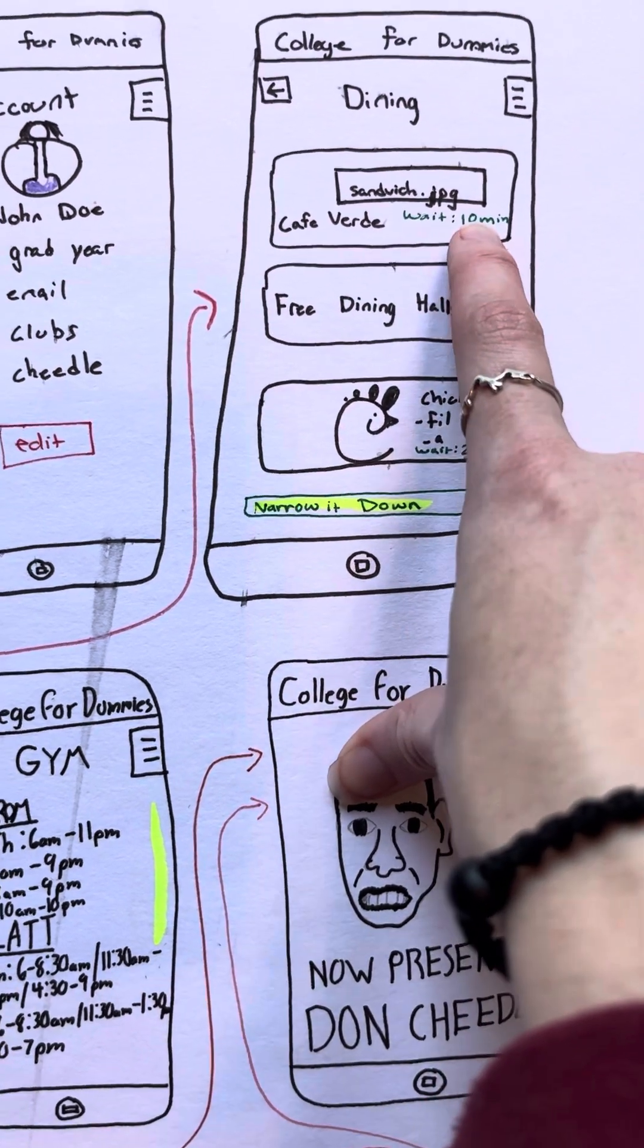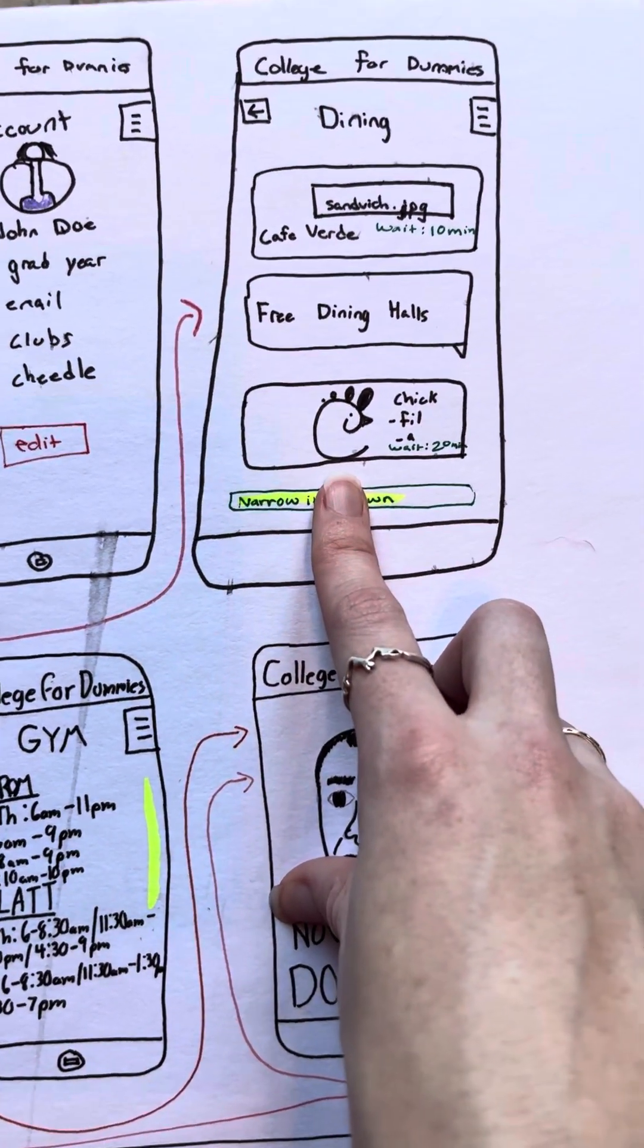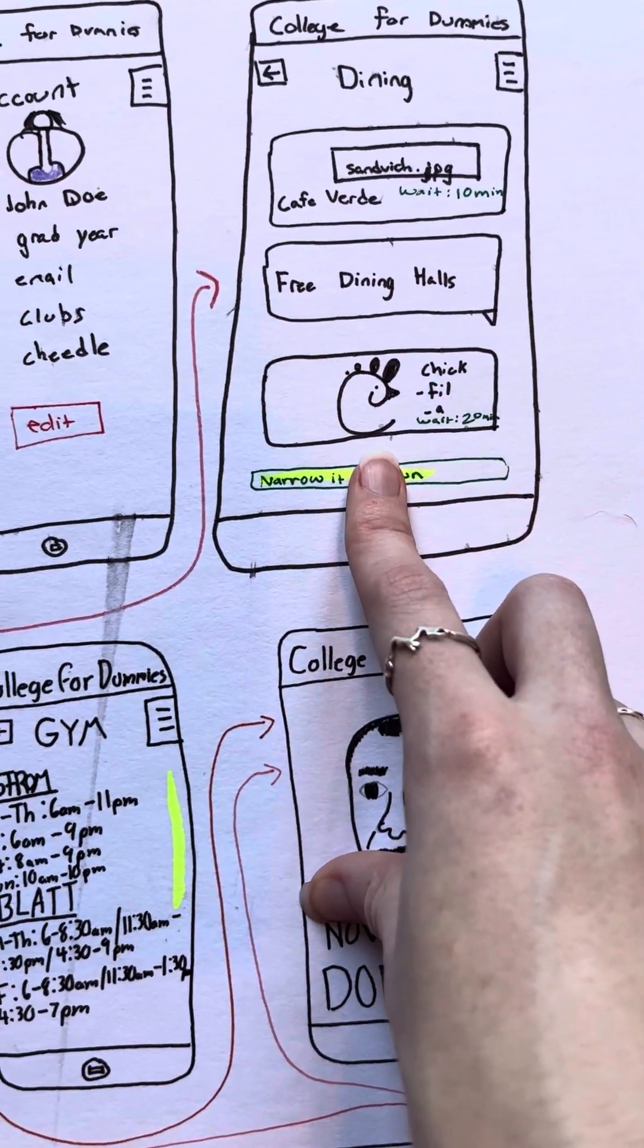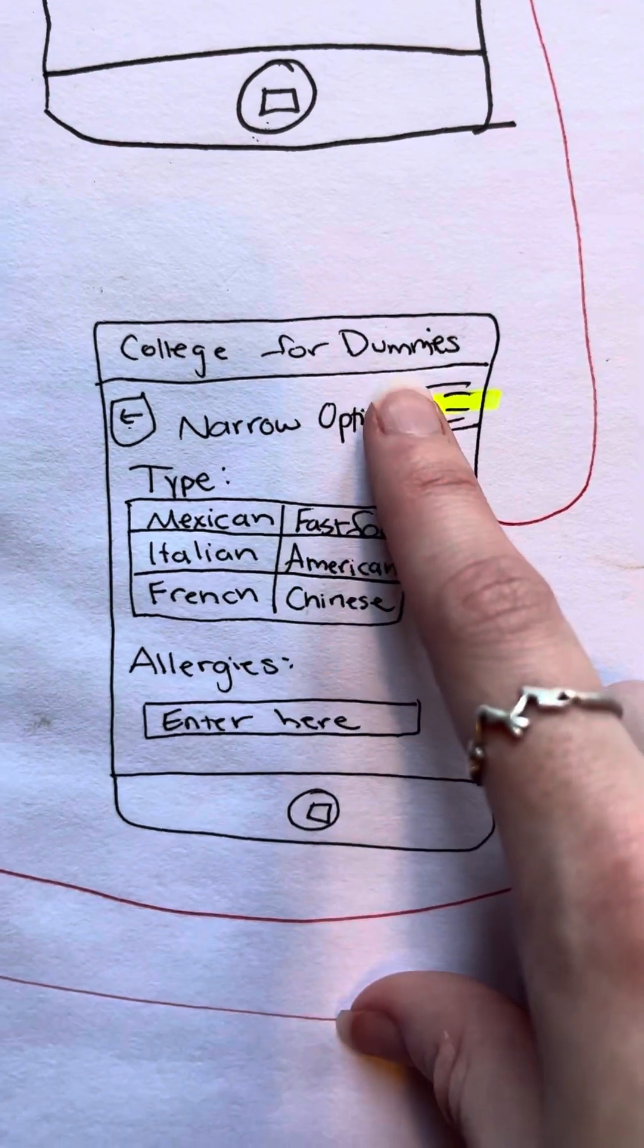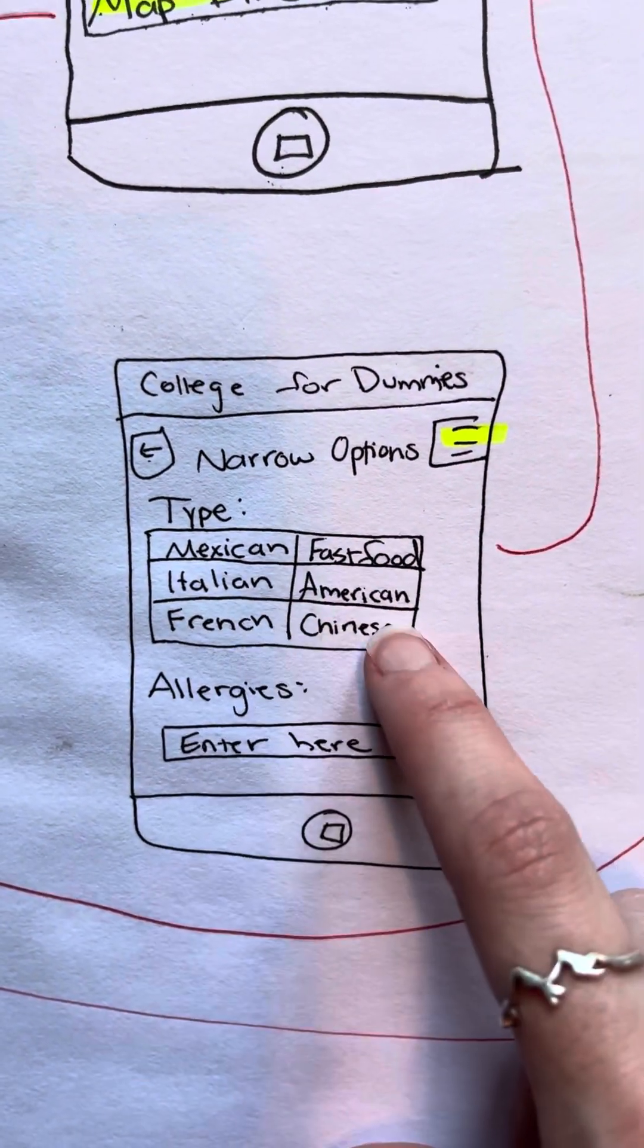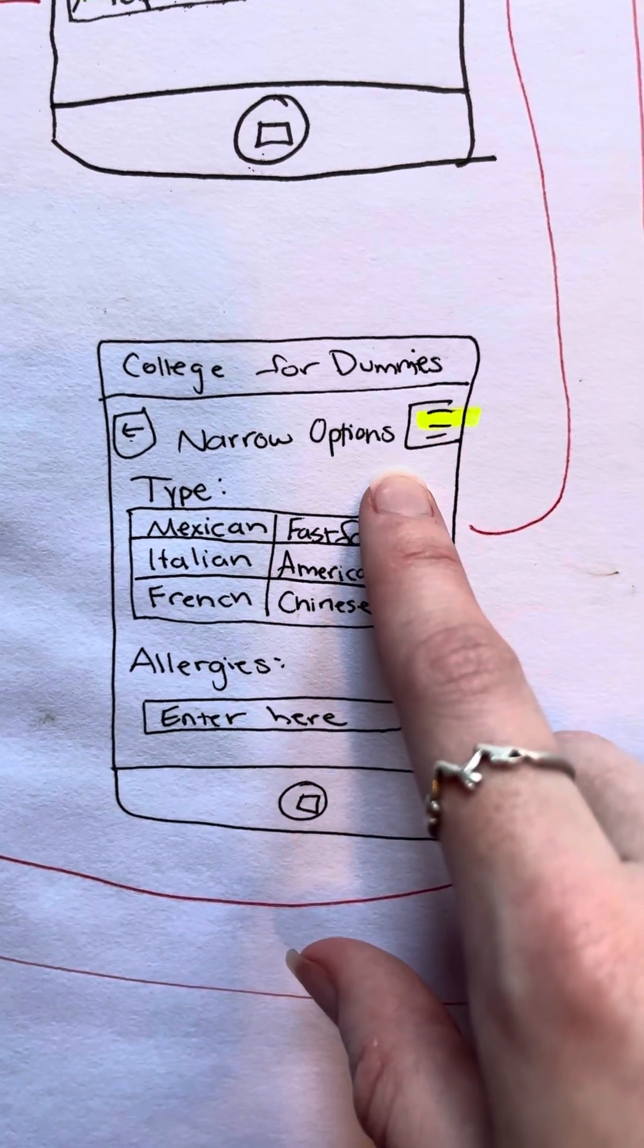It does indeed show you the actual wait time here. And if you need help narrowing it down, because I know it can be overwhelming at first, you can click narrow it down. That will take you down here to narrow your options. You can select your type of food, any allergies, and that will help narrow down your options.